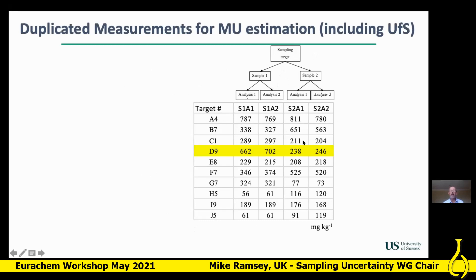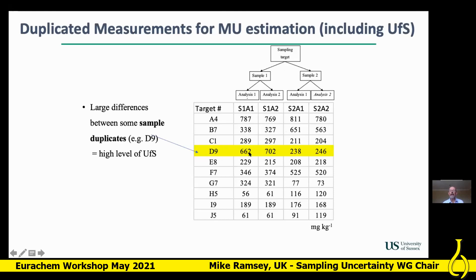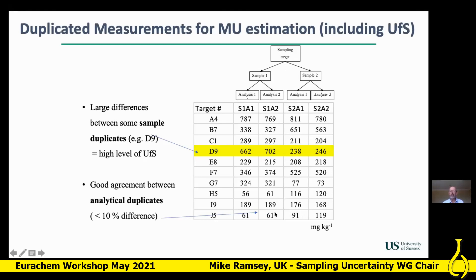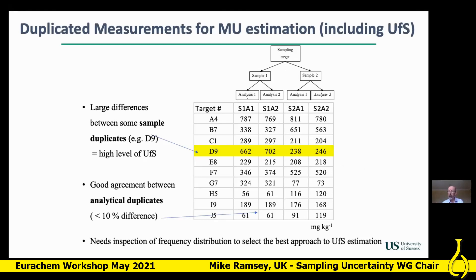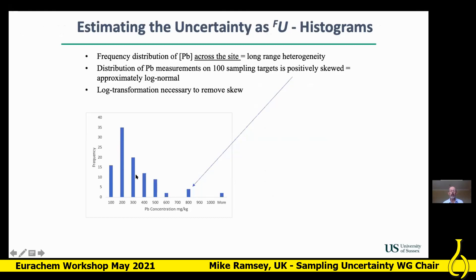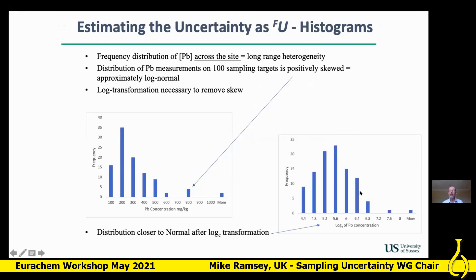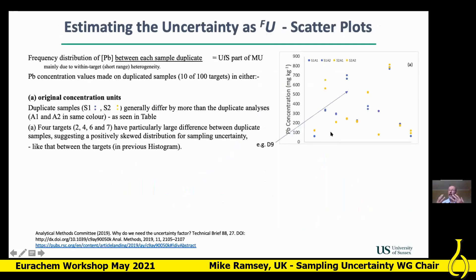Looking at the results from the duplicated samples in this nested design: at 10 targets where duplicates were taken, target D3 shows sample one at about 600 ppm and sample two at only about 200 mg/kg — clear sampling heterogeneity causing sampling uncertainty. Analytical duplicates were generally in much closer agreement. Looking at all 100 sampling targets we see a very skewed distribution, and taking log to base e gives something much more approximately log-normal.